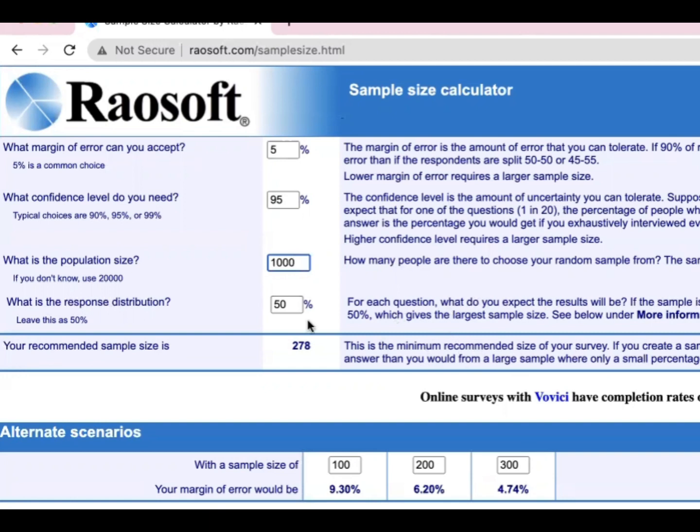So we have here if 1,000 population and you are using 95% confidence level and 5% margin of error, you have a recommended sample size of 278. This is a large sample size enough for your study. And you can change that one. So we have here on the right side, if 95% confidence level, you have 278.